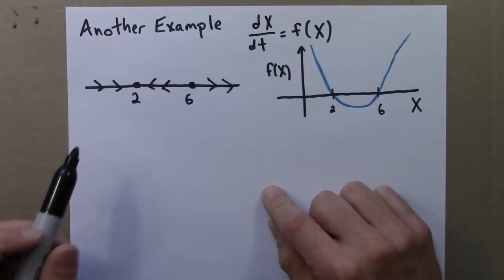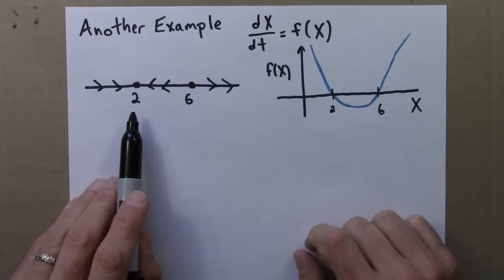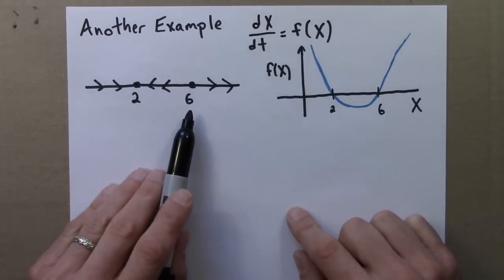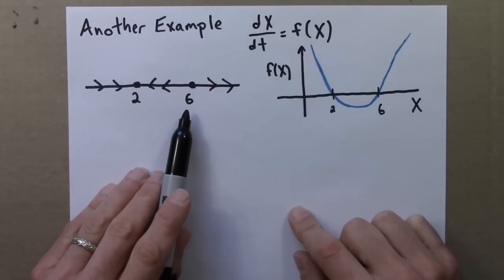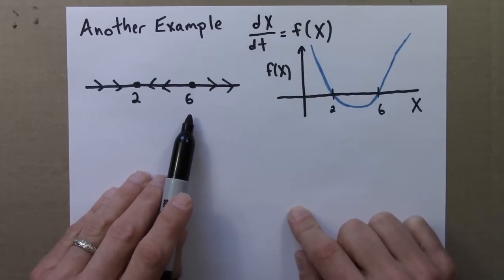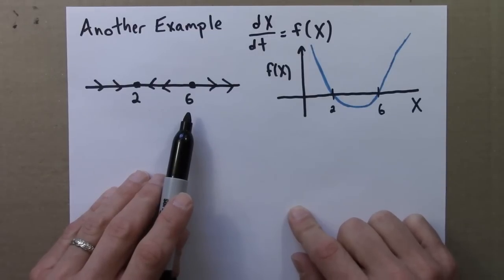We have two different fixed points. Two is stable, or an attractor. Six is unstable, or a repeller. We can also sketch solution curves to this differential equation. I'll start by drawing some axes.